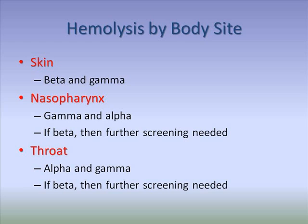For the nasopharynx, normal flora would give gamma and alpha hemolysis. Beta hemolysis can indicate carriage of Staphylococcus aureus in the nasopharynx. This would require further testing to assure that Staphylococcus aureus was not MRSA, or methicillin-resistant Staphylococcus aureus. It should also be noted whether it is resistant to any other antibiotics. Carriage of antibiotic-resistant strains of Staphylococcus aureus should be eliminated through careful antibiotic treatment.